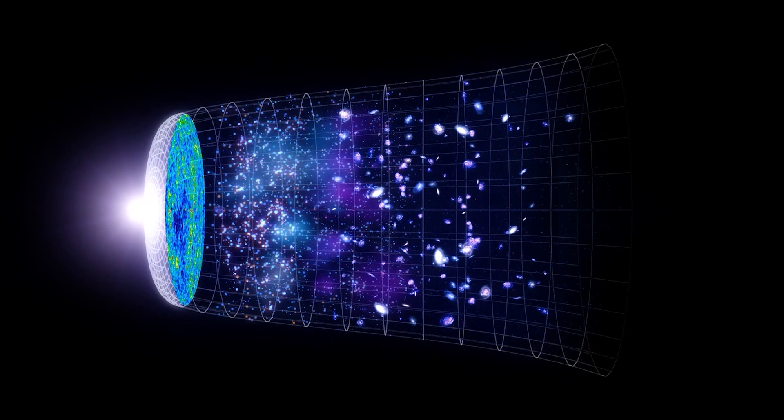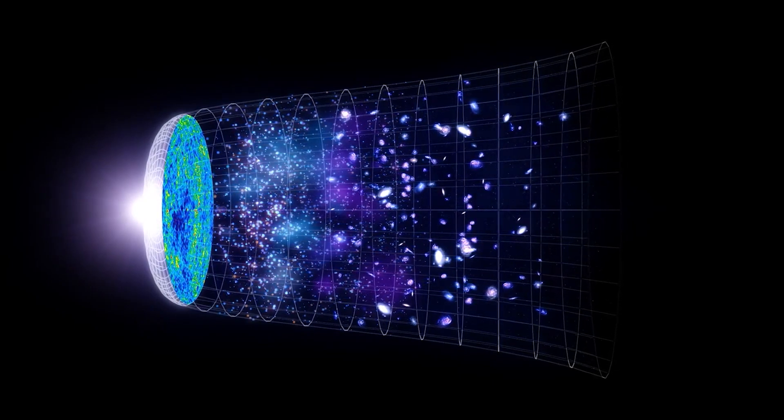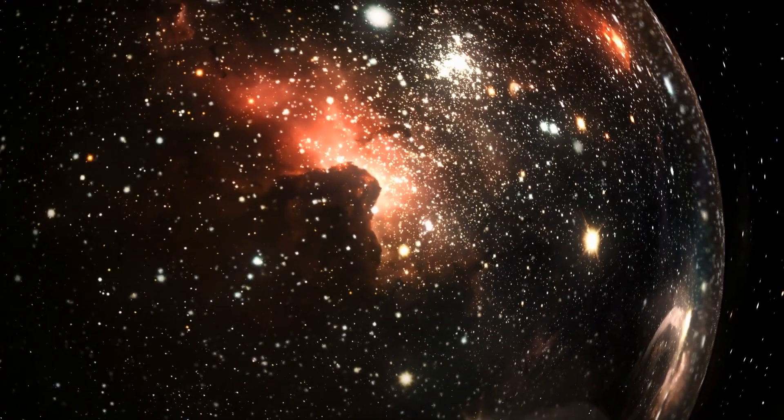Level 2 encompasses universes with different physical constants. In the theory of eternal inflation, the entire multiverse or space continues to stretch eternally, but some regions cease stretching, forming separate bubbles that represent embryonic level 1 multiverses.